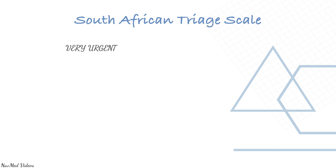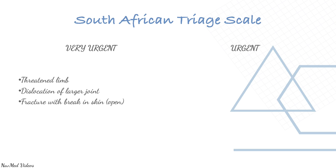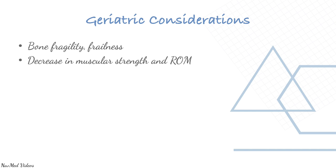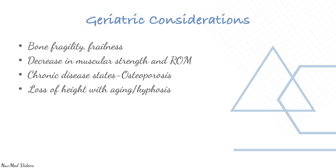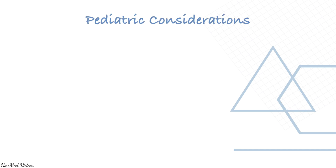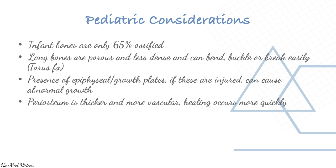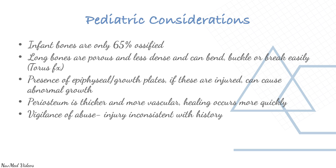Triage scale for musculoskeletal injuries: very urgent if there is a threatened limb, dislocation, or fracture with breaking skin; urgent if there is dislocation of a finger or toe, or fracture with no skin breakage. The geriatric age group is important to consider — bones are fragile with fragility fractures, decreased muscle strength and range of motion, chronic disease states, osteoporosis, loss of height, kyphosis, and comorbidities. For pediatrics, infant bones are only 65% ossified, long bones are porous and less dense and can buckle or break easily, with possible torus fractures; epiphyseal growth plates are present; periosteum is thicker and more vascular so healing occurs more quickly.